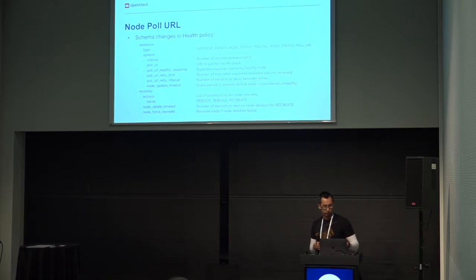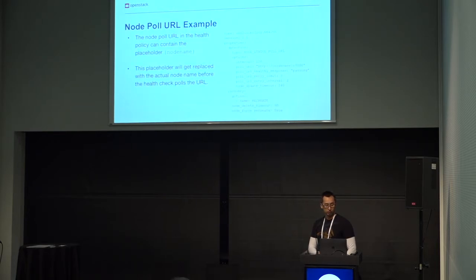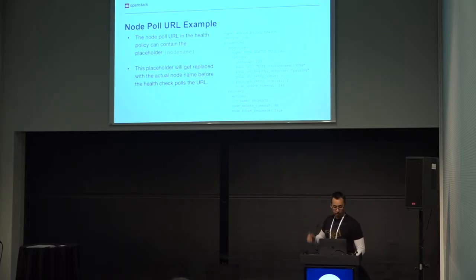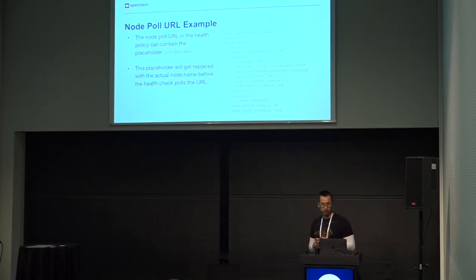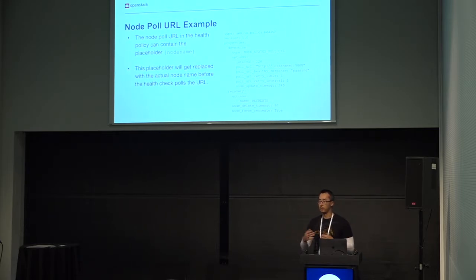The recovery options below haven't changed in the Rocky release. Looking at an example on the right, the way you specify the pull URL is by using a placeholder with the node name in curly braces. The health engine will replace that placeholder with the actual node name during the health check, so you can specify the instance name that it will query against.